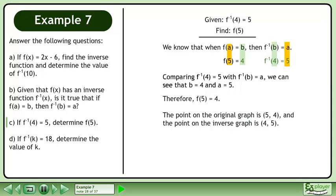The point on the original graph is the ordered pair 5, 4, and the point on the inverse graph is the ordered pair 4, 5.